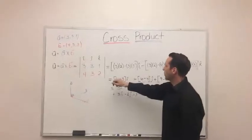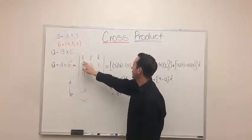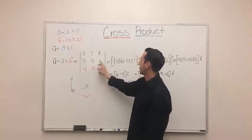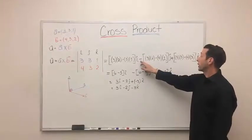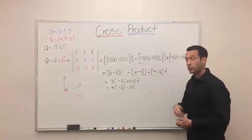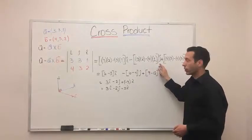Next, we are going for the J component. So we are crossing 3 times 2, and 4 times 1. That gives you here. Minus, the second term is always a subtraction. So it is minus 3 times 2, minus 4 times 1. That is your J component.